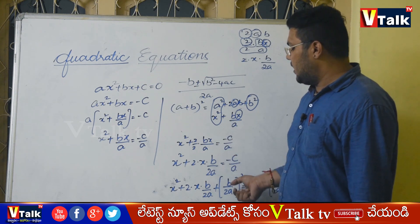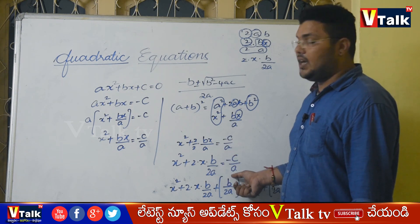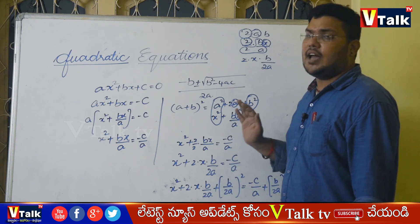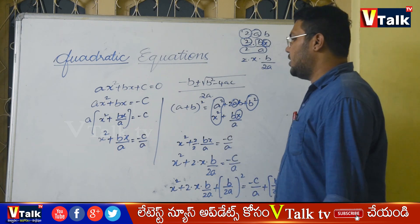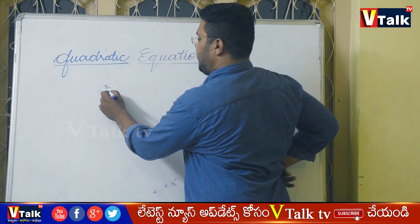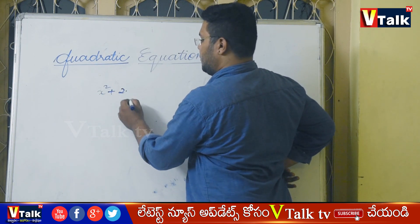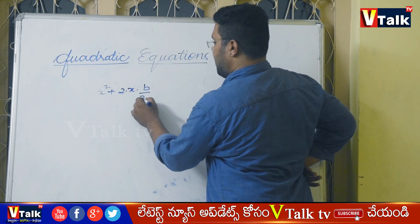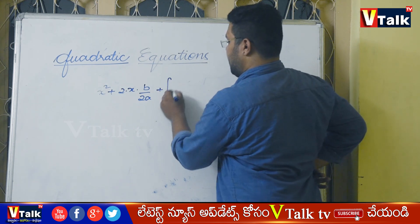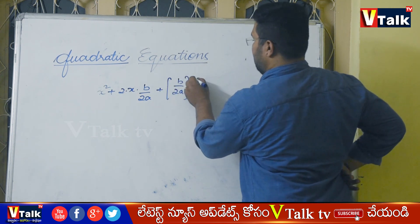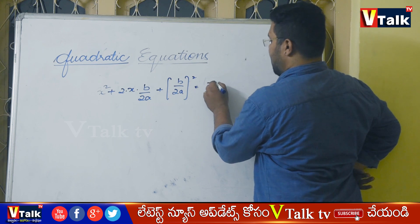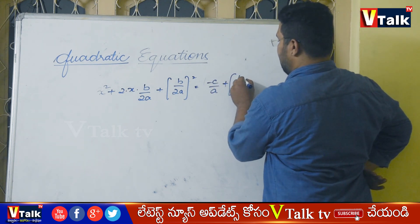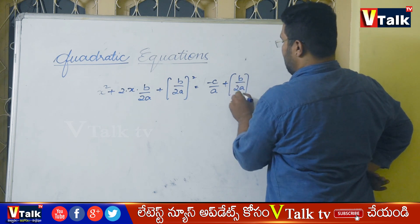Next step: squaring b by 2a and adding on both sides. So: x squared plus 2 into x into b by 2a plus b by 2a whole square, equal to minus c by a plus b by 2a whole square.